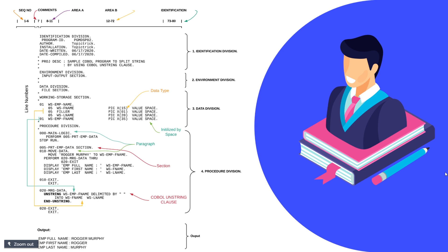In that paragraph, UNSTRING WS-EMP-F-NAME DELIMITED BY SPACES is used, splitting the full name and assigning the split values into first name and last name. The arrows in the slide clearly show how the variables are used. Looking at the output, 'Roger Murphy' has been split into two strings: 'Roger' and 'Murphy'.